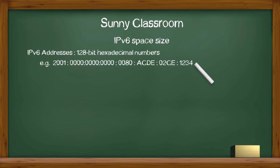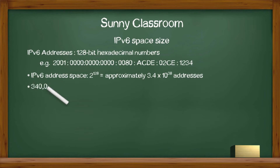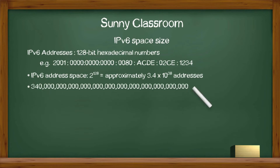How large is IPv6 space? 2 to the power of 128 is approximately 3.4 times 10 to the 38th. Let's expand it out — it looks this long, with these many zeros. My, my, my. Let's get a sense of this huge number.